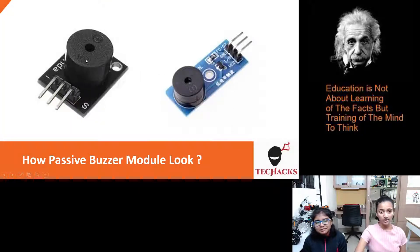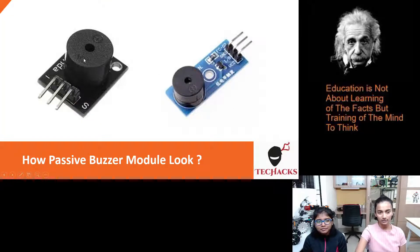So this is how the passive buzzer looks like. This is the buzzer and we have three pins: the negative, positive, and the signal pin.